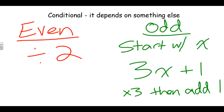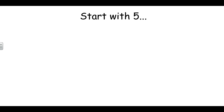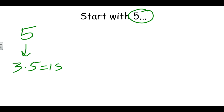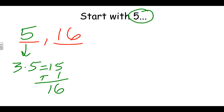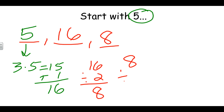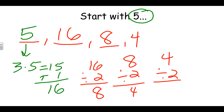Let's see how this plays out by starting with the number five. Five is odd, so we multiply it by three and add one, which gives us 16. So the next number in the sequence is 16. Now 16 is even, so we divide it by two and get eight. Eight is also even, so we divide by two and get four. Four is also even, so we divide by two — and we get two, rather. Two is even, so we divide by two and get one.